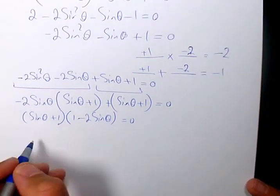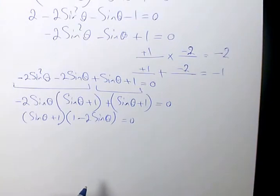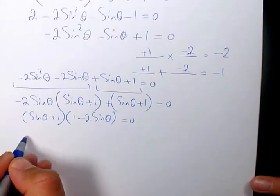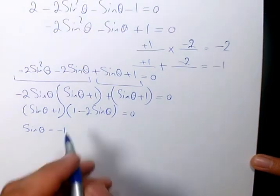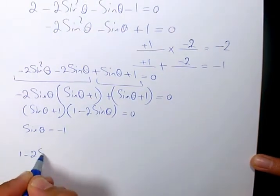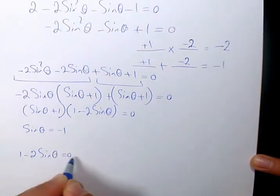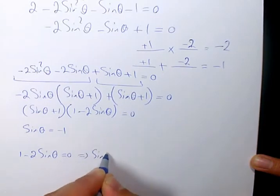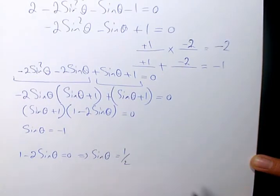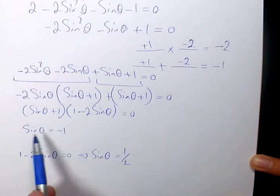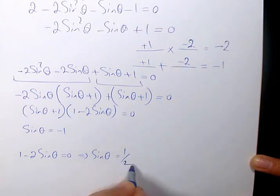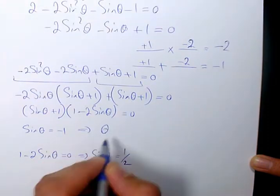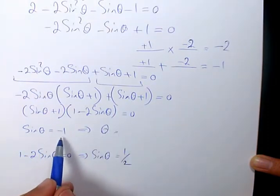So we have two scenarios. The first is when sine theta plus 1 equals 0, which means sine theta equals negative 1. The second is when 1 minus 2 sine theta equals 0, which means sine theta equals 1 over 2.